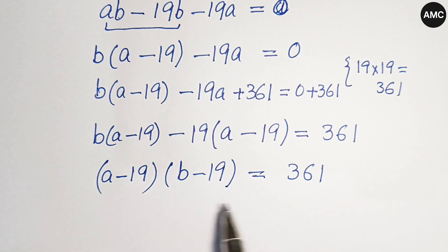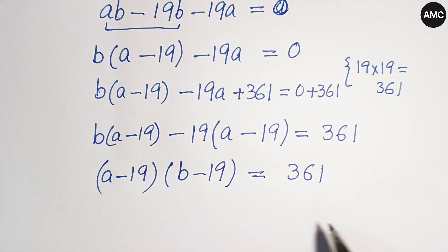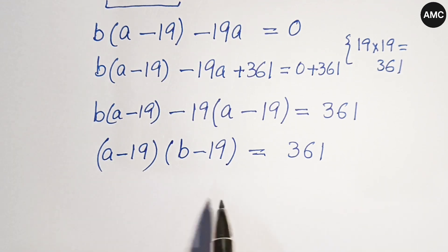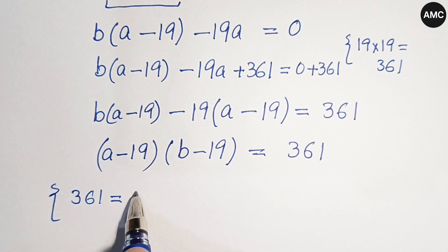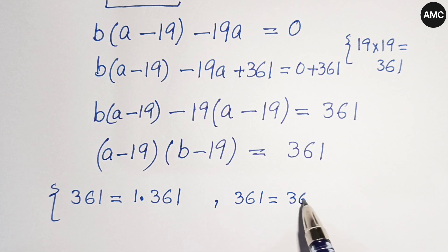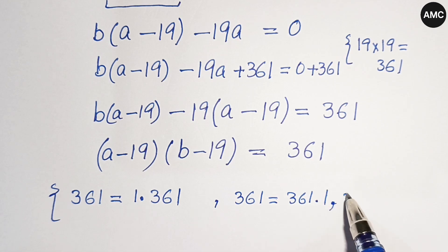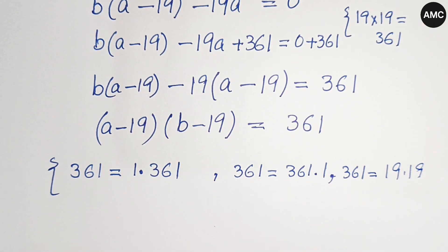Since a and b belong to the integers, we find the factor pairs of 361. We have: 361 equals 1 times 361, 361 times 1, and 19 times 19. We also consider the negative factor pairs: minus 1 times minus 361, minus 361 times minus 1, and minus 19 times minus 19.